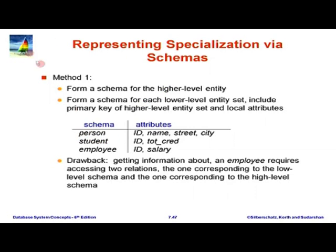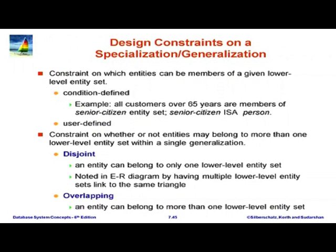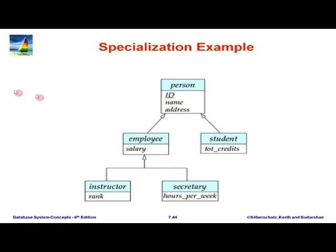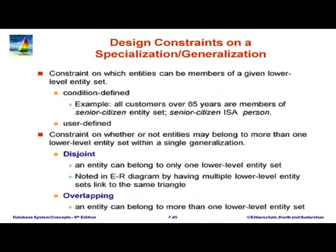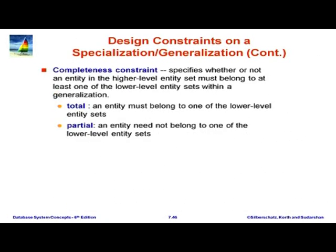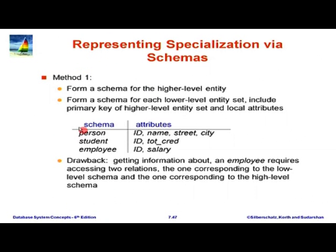We need a relation for each schema in a specialization. Looking at our specialization — person, employee, student — let us focus on just this part and ignore instructor, secretary, and further down. One of the methods has one relation for person, one for student, and one for employee.